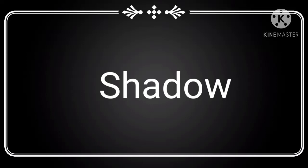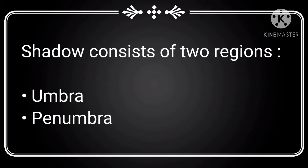Good afternoon class. Today we discuss about the shadow. What do you understand by shadow? Shadow is a dark patch formed behind an opaque body when it is placed in the path of light — this is called shadow.